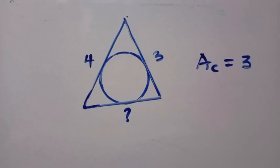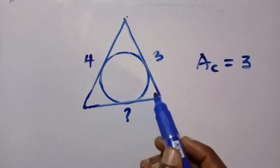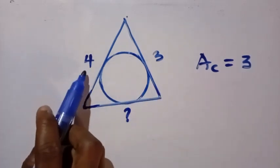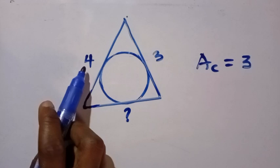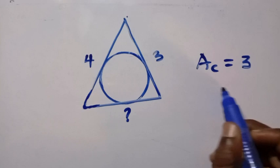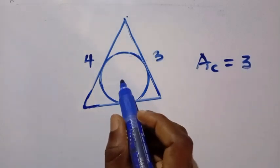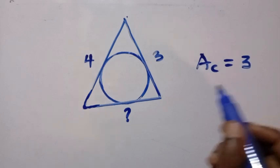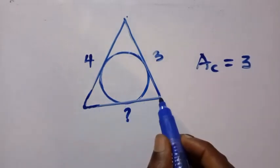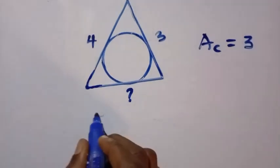Good day viewers, you are welcome. We have an interesting geometry challenge to solve today. We are given a triangle with a circle inscribed in it. This side is of length four, this side is of length three, and we also need to find a third side, given that the area of the circle is three. Let's see how we can solve this.